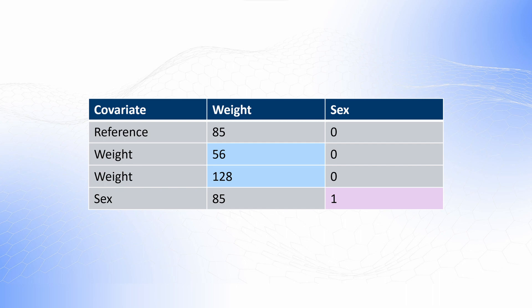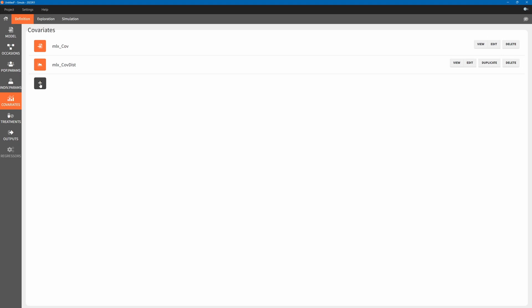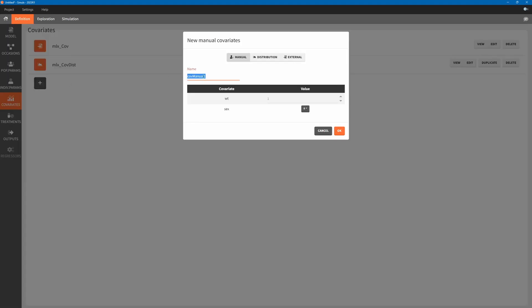For example, we will choose weights of 56 and 128 kilograms. And for sex, we want to see the impact of value 1 compared to the reference value of 0. We will now create the covariate elements in Simulix.